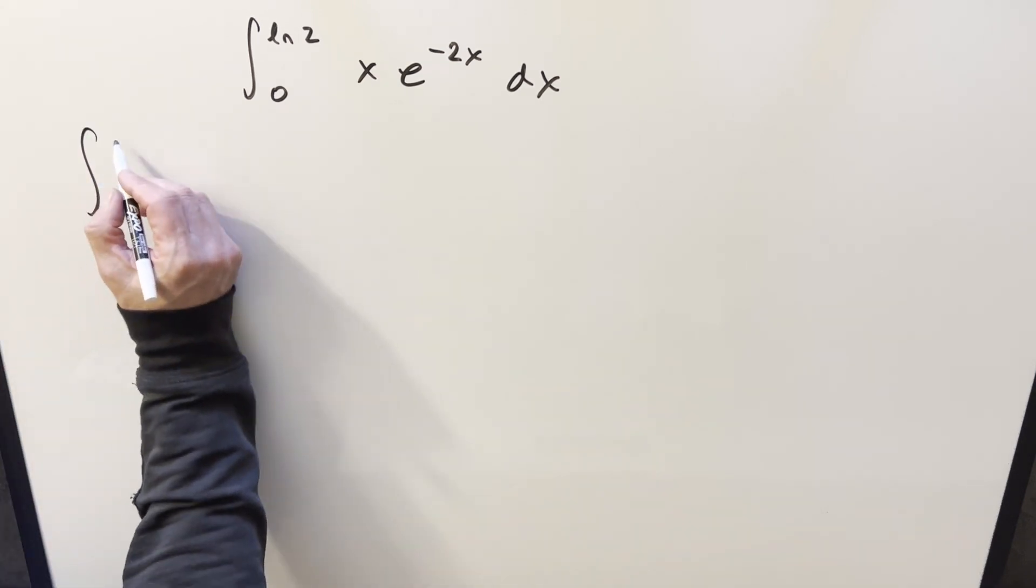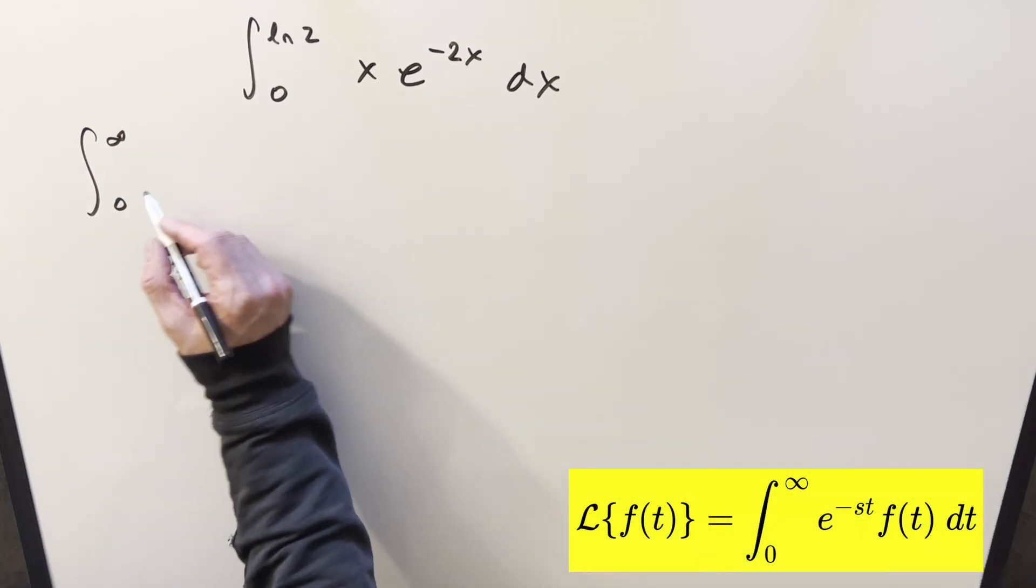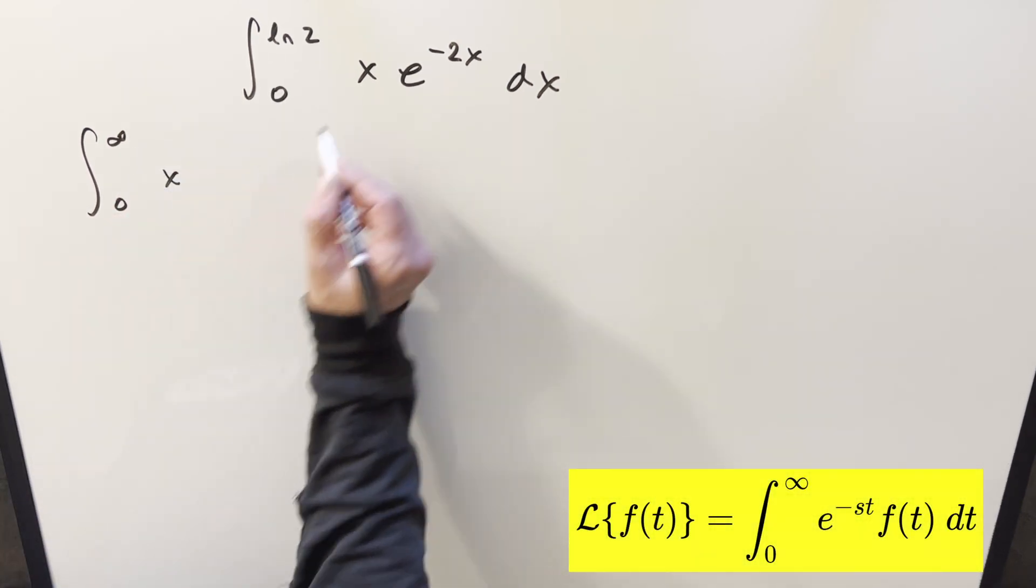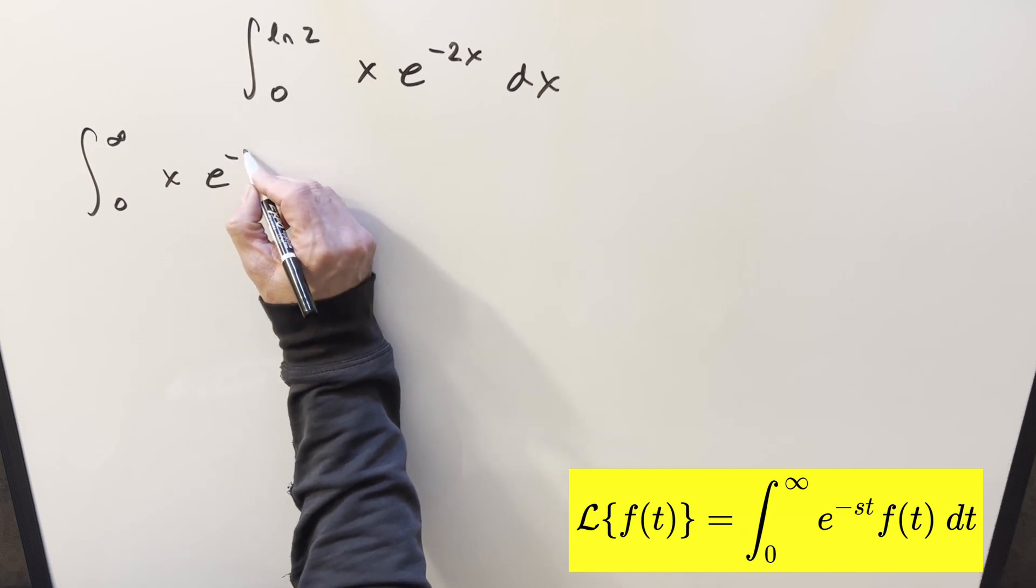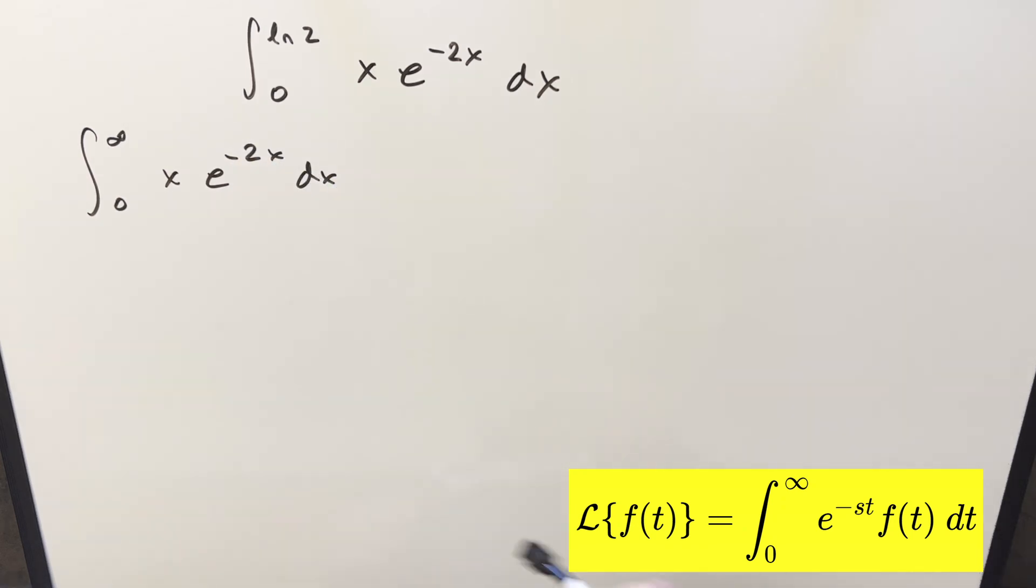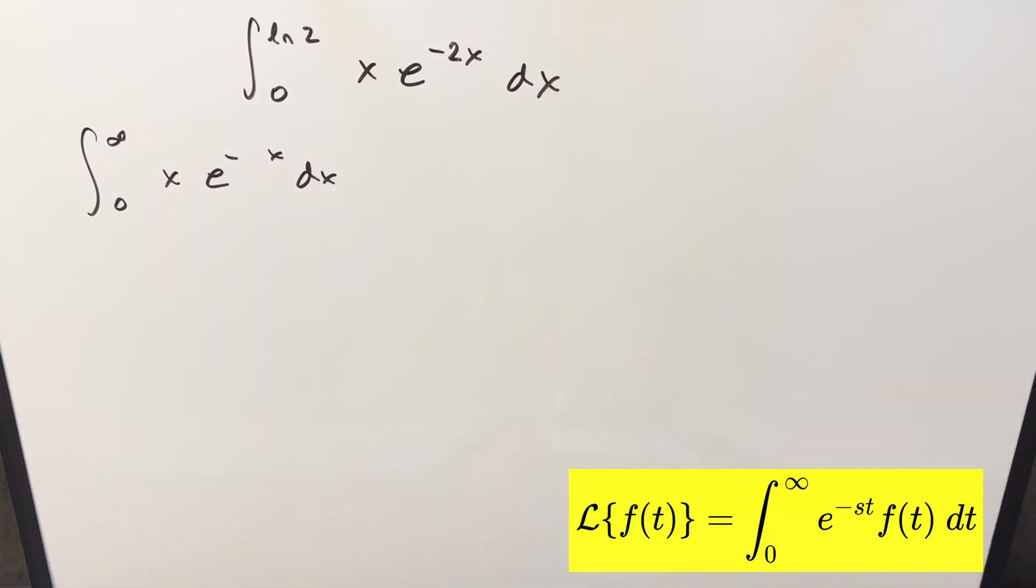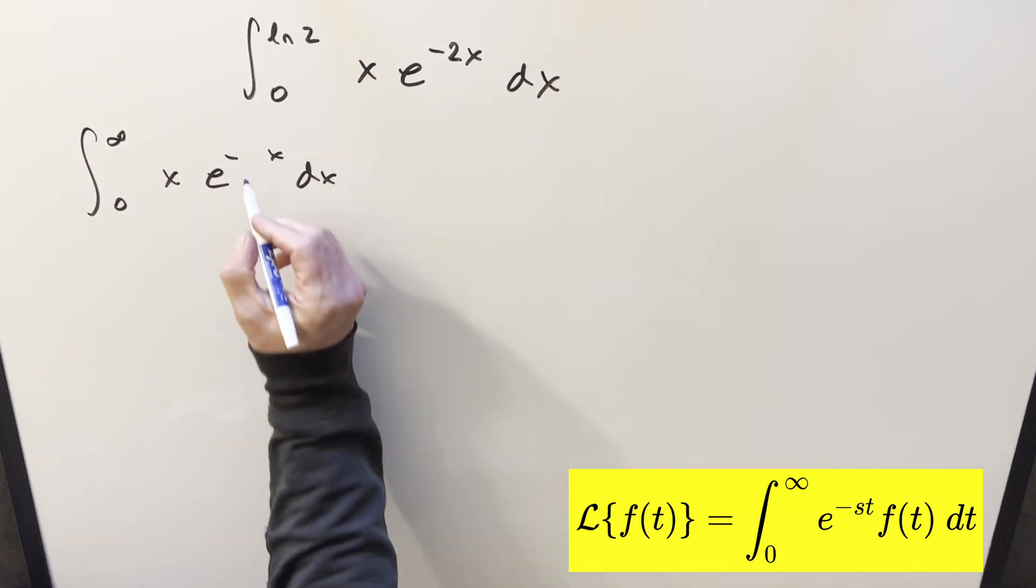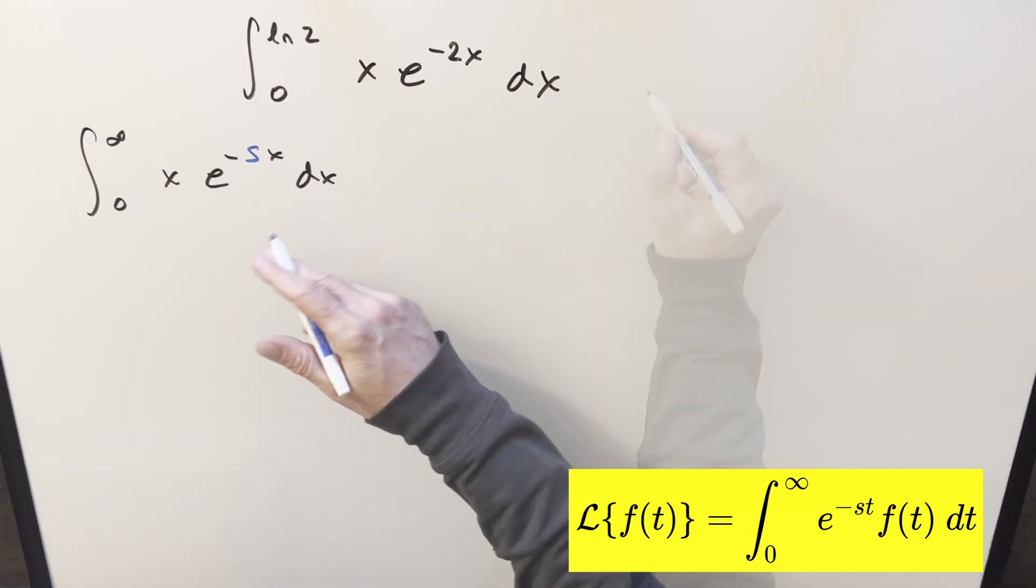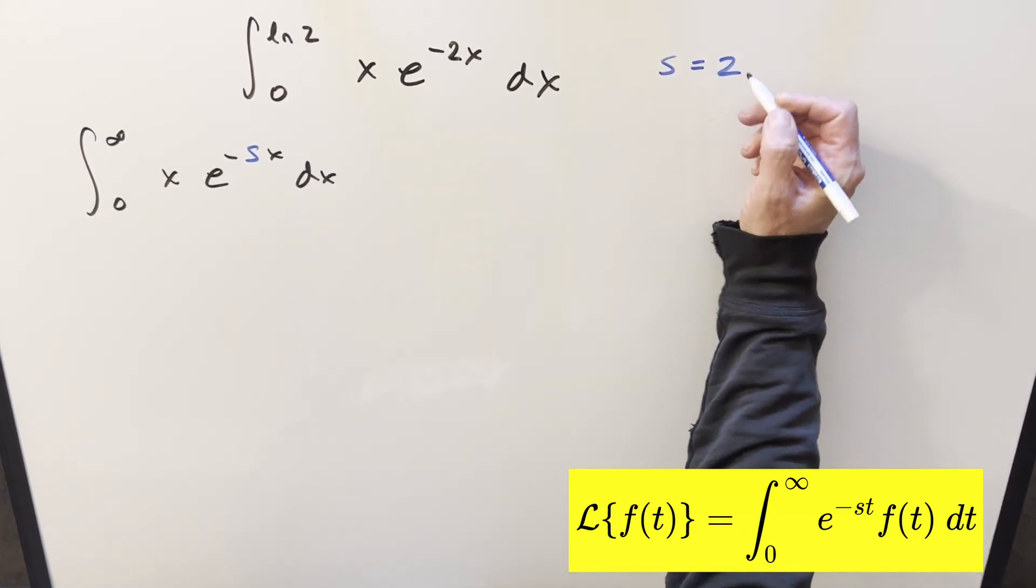First, in order to have a Laplace transform, we want this integral going from 0 to infinity. So what I can do is force this to happen and put in our same stuff. We have the integral x e minus 2x dx. And just notice for this 2, if I just change this and I'll just call this, instead of having a 2, let's call this an s. And we'll just keep in mind that when we want to get back to our problem, we need to put back s equal 2.